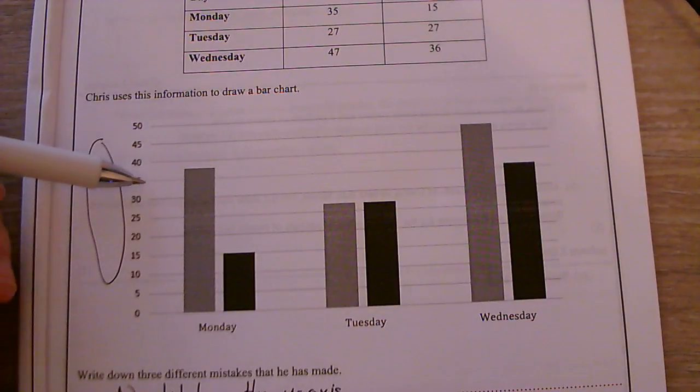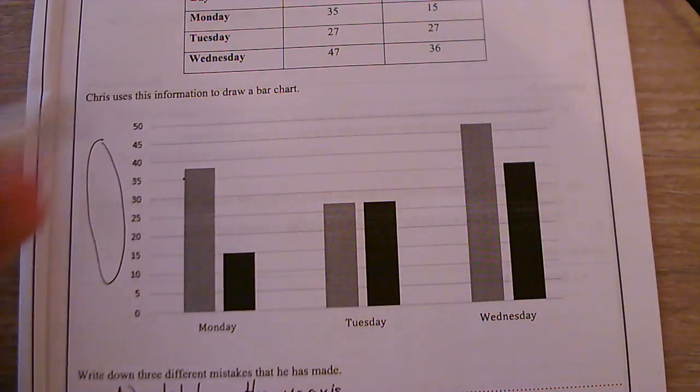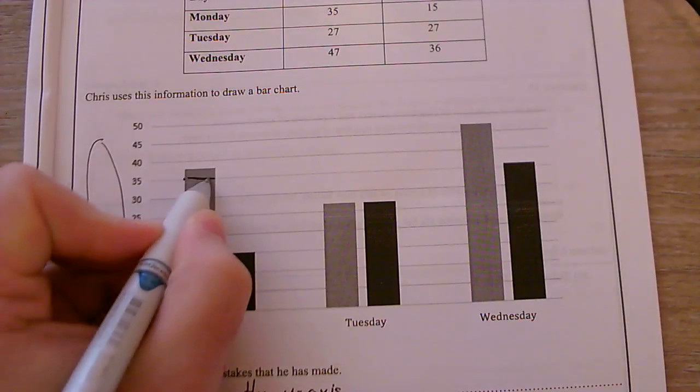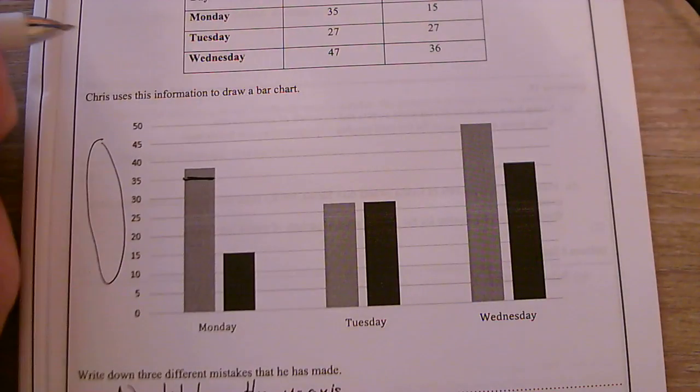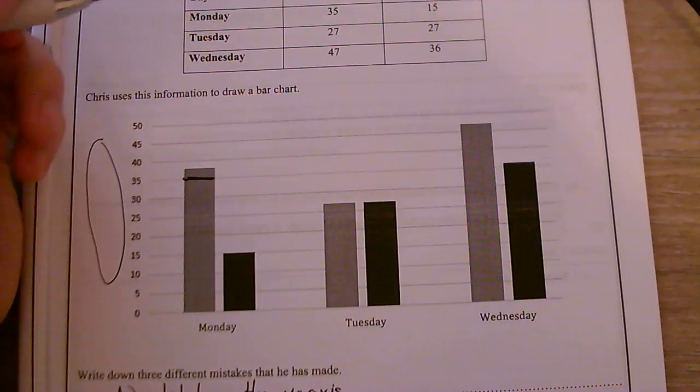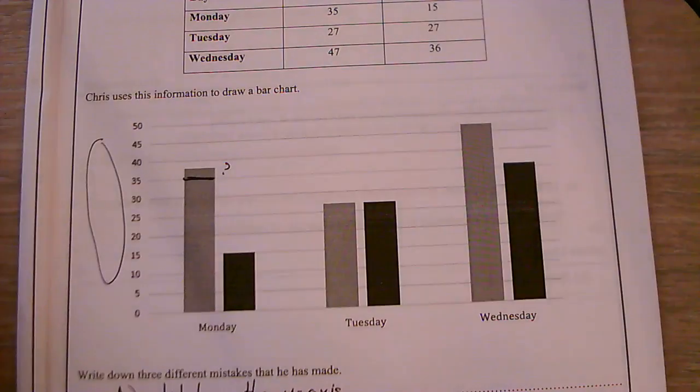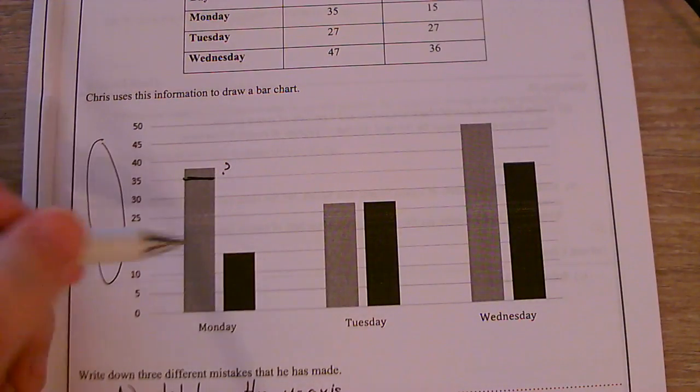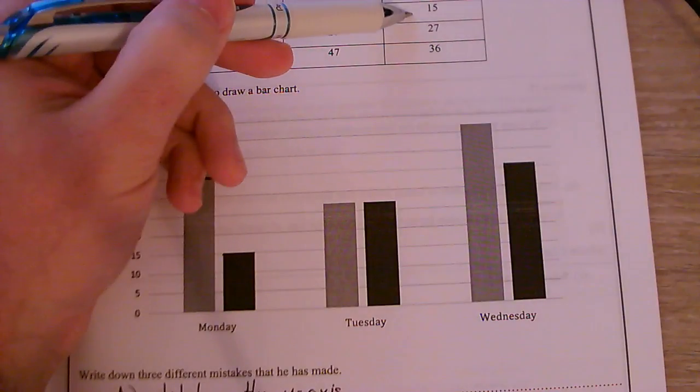Okay, so 35 is where this first one should be at. Well that is not at 35, it's more like 37. Okay, so that must be my next mistake. This here is at 15, which is what that one is at.